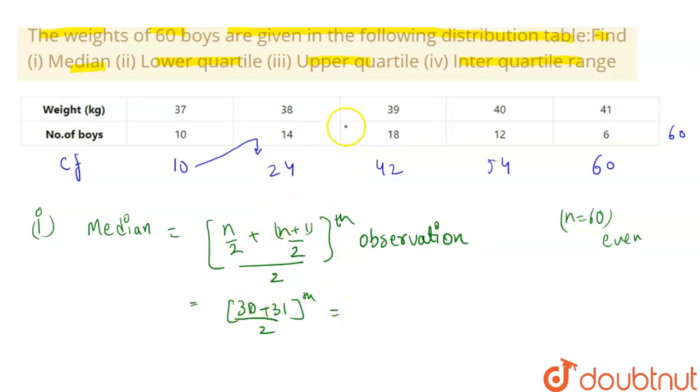So this becomes 30th observation. See, now we'll look in CF. So the number greater than 30 is 42, that means 30 will lie in this, which has frequency 18, and 39 is the corresponding weight. So 39 plus 39 upon 2. So this becomes 78 by 2, or we can say 39. This is our median.